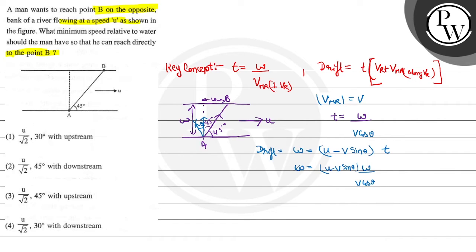So we can cancel out here. V cos theta plus V sin theta.